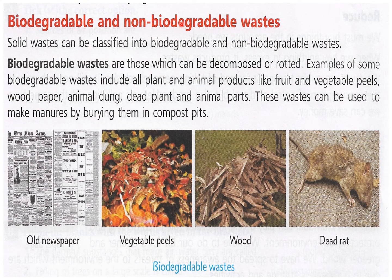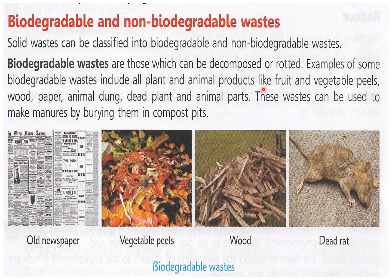Now, biodegradable and non-biodegradable waste. Solid waste can be classified into biodegradable and non-biodegradable waste. Biodegradable waste are those which can be decomposed or rotted. Examples include all plant and animal products like fruit and vegetable peels, wood, paper, animal dung, and dead plant and animal parts. These wastes can be used to make manure by burying them in a compost pit, so they can be decomposed and used again.